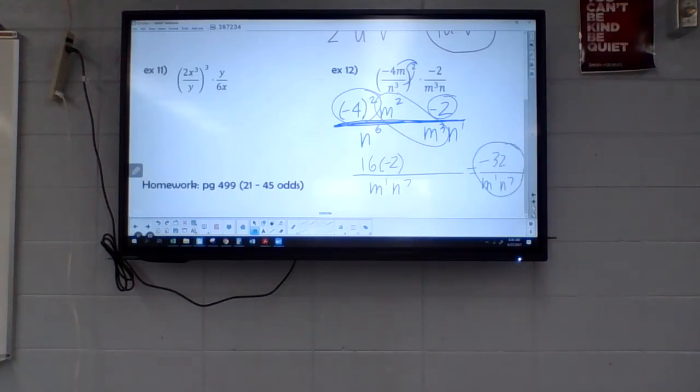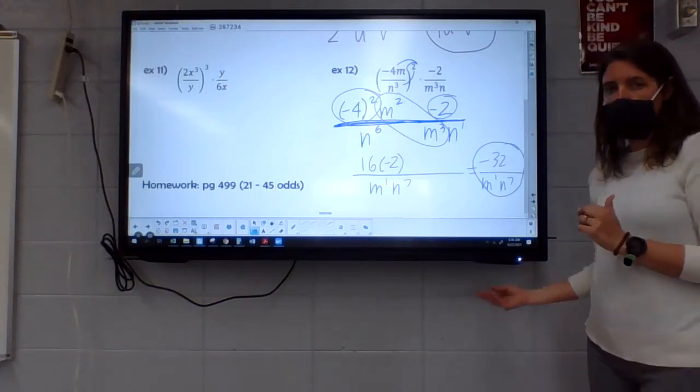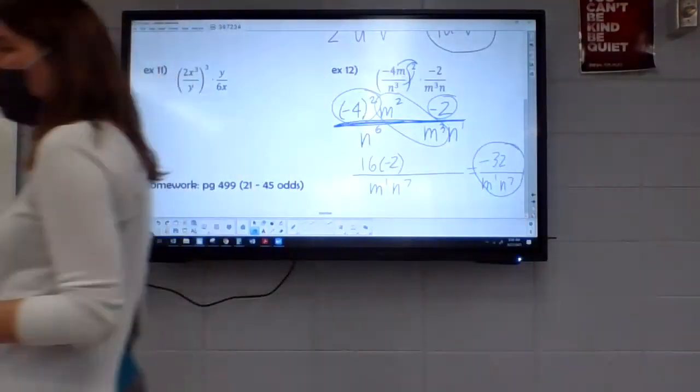So 16 times that negative 2 gives me that negative 32 over our fraction there. All right, questions?